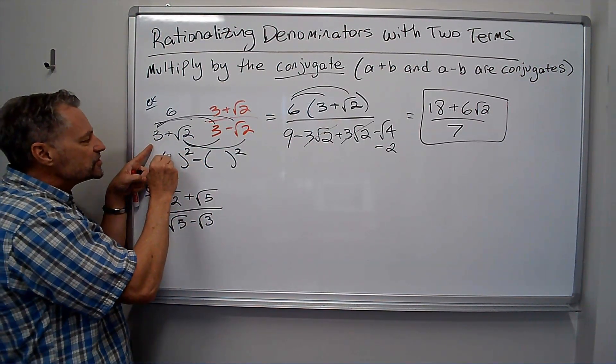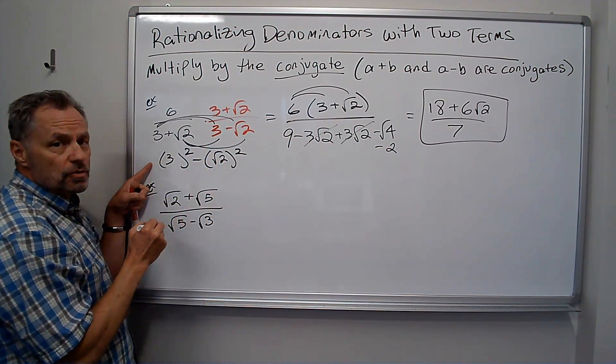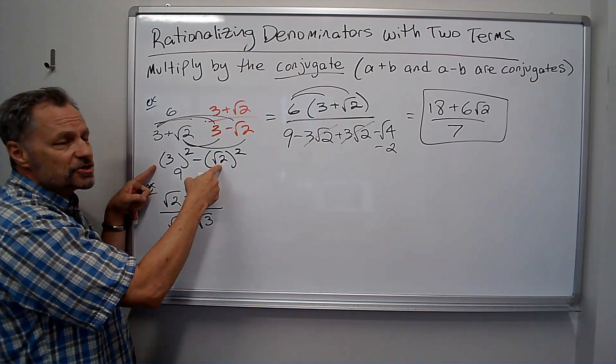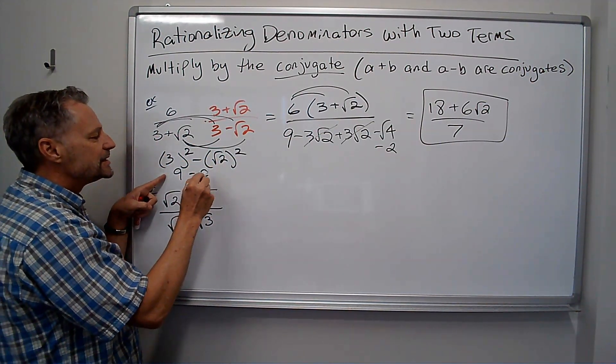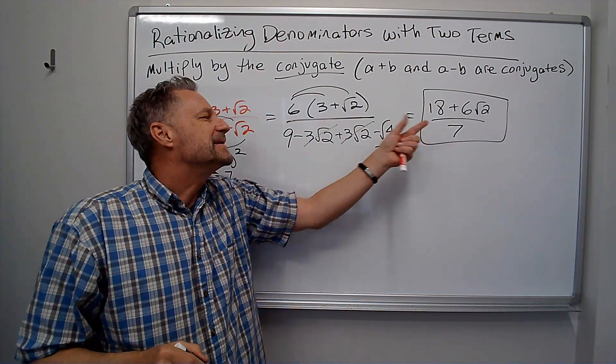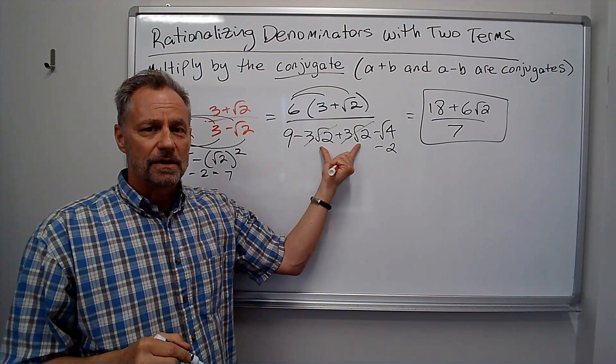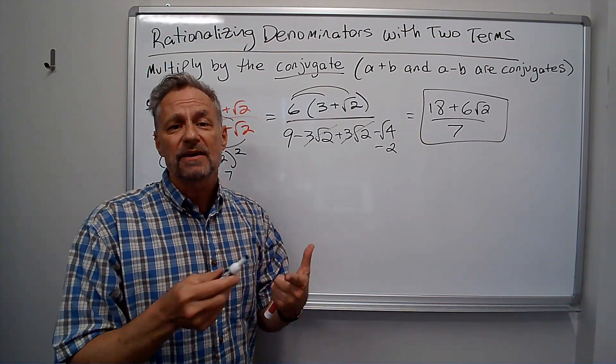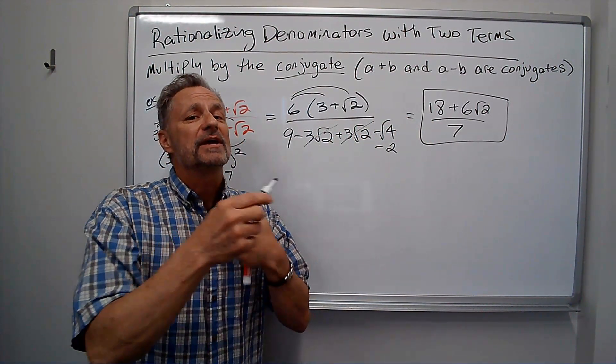The first one was the 3, the second one was the square root of 2. Well, 3 squared is 9, square root of 2 squared is 2. 9 minus 2 is 7, and that was my denominator. Because the middle stuff always cancels out. So you can use that as a shortcut if you want. If not, go ahead and foil it out.